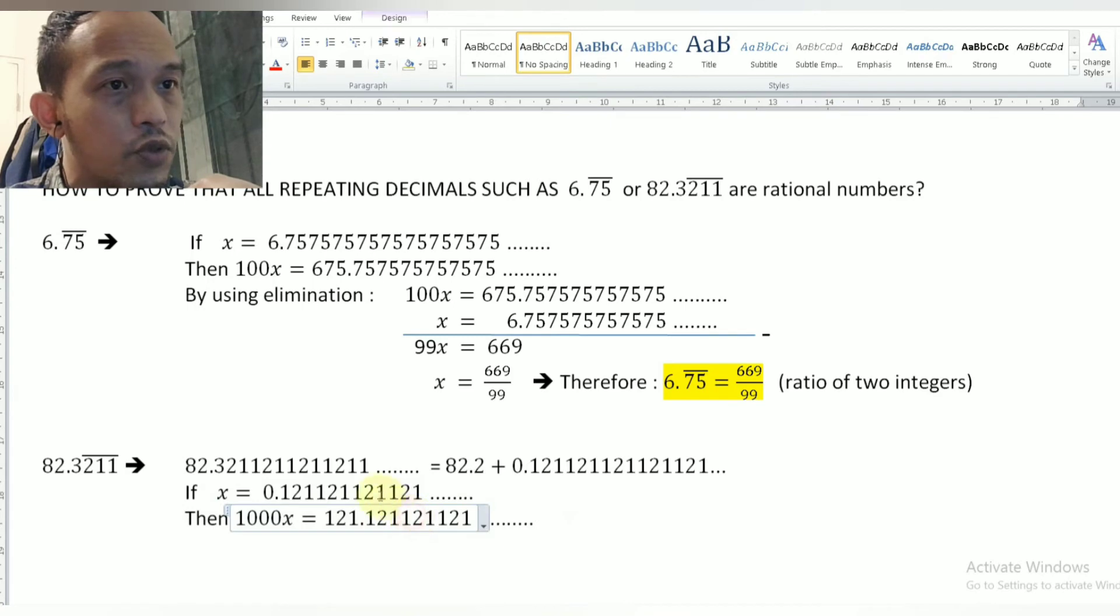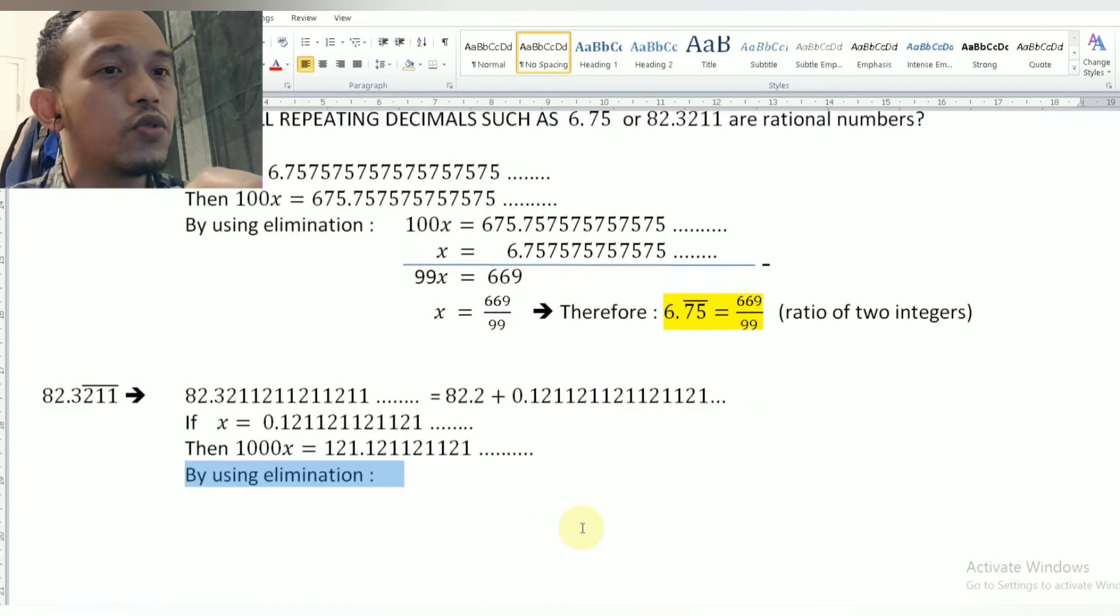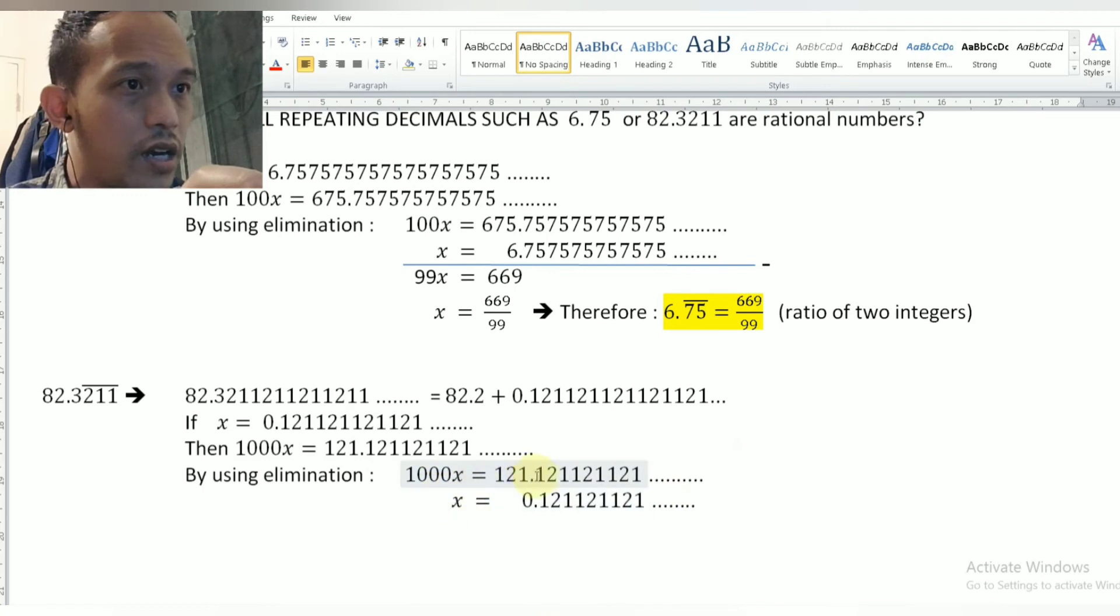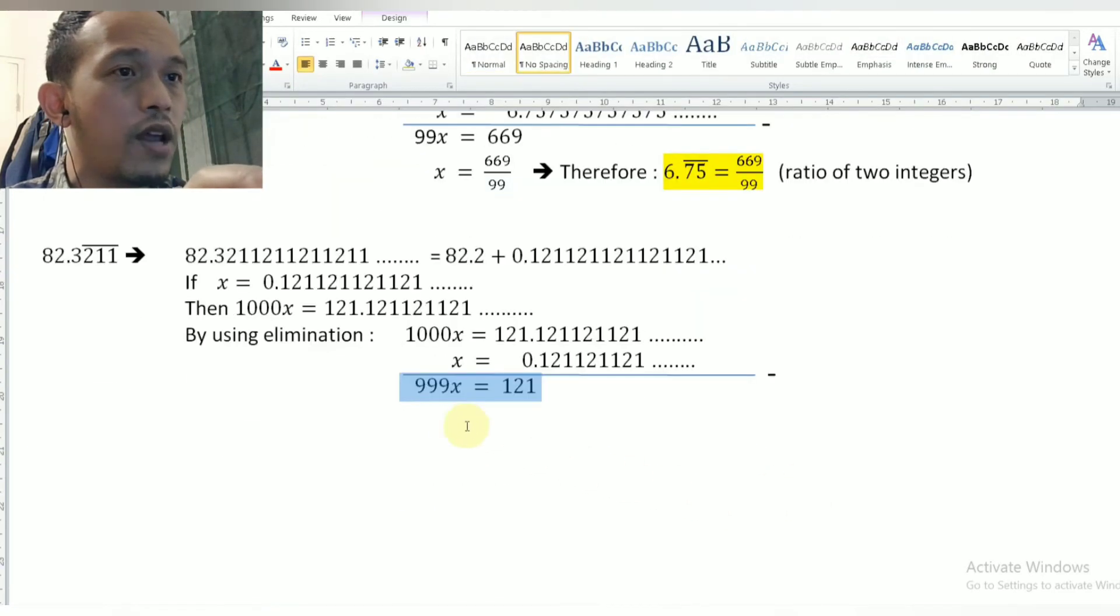So I will have two decimals with the digits after decimals are exactly the same, right? So I can go to the elimination. This is the two equations here. So when I eliminate, when I subtract these two equations, the decimals will be eliminated since we have exactly the same pattern here. So when I subtract, I will have 999x equals 121. So the x will be equal to 121 over 999.